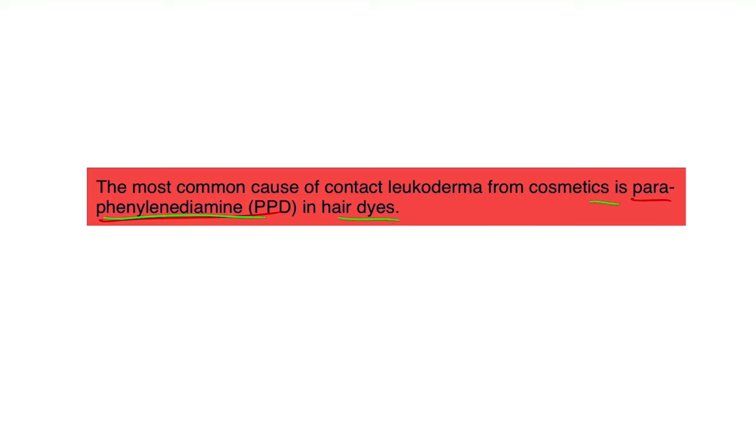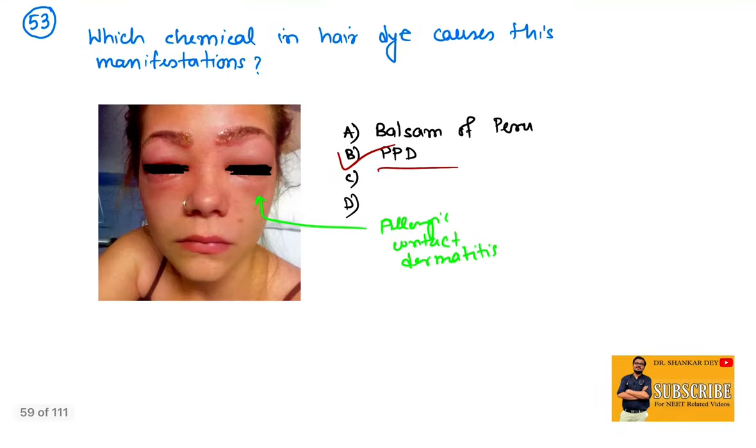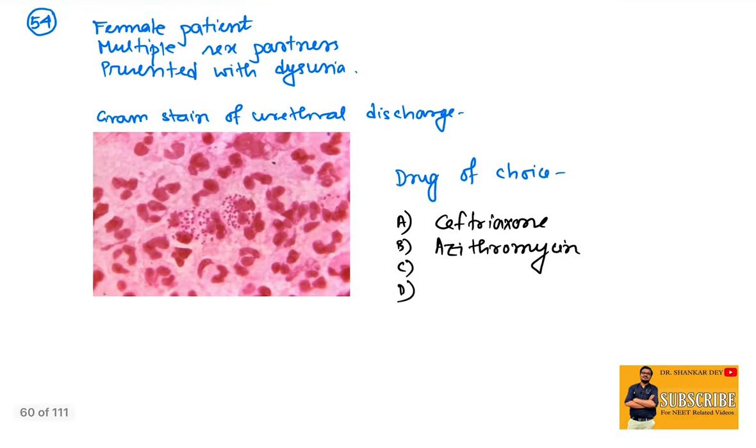Question 54: female patient with multiple sex partners presented with dysuria. Gram stain of urethral discharge was done. Histopathological image shows multiple kidney-shaped diplococci arranged intracellularly. Kidney-shaped gram-negative diplococci. This is suggestive of gonorrhea or Neisseria gonorrhoeae. What is the drug of choice in case of gonorrhea? The drug of choice will be ceftriaxone.